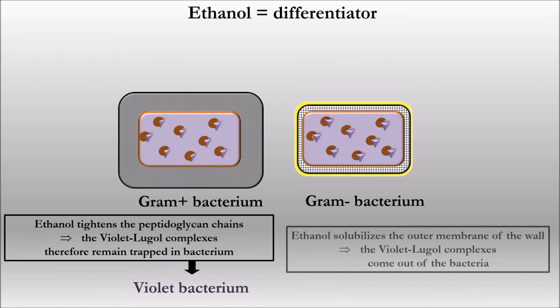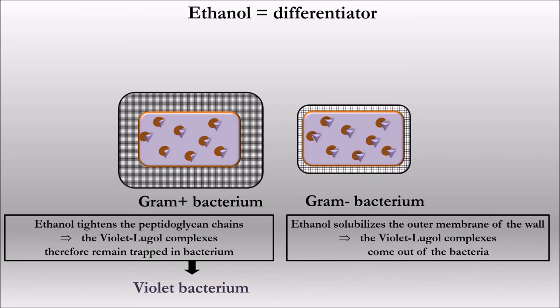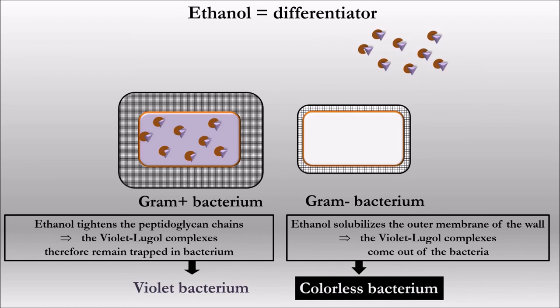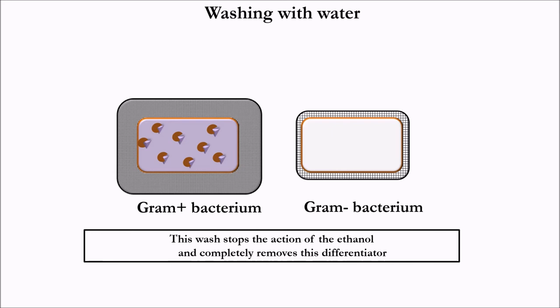In gram negative bacteria, ethanol solubilizes the outer membrane of the wall, so the violet-lugol complexes come out of the bacteria, which has only a thin layer of peptidoglycan in its wall. The bacteria therefore become colorless — we can say these bacteria are decolorized by ethanol. Washing with water stops the action of the ethanol and completely removes this differentiator.